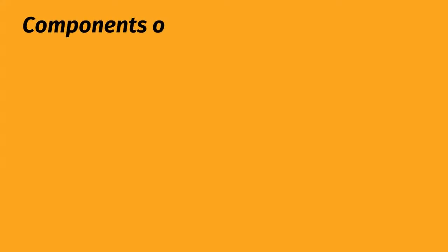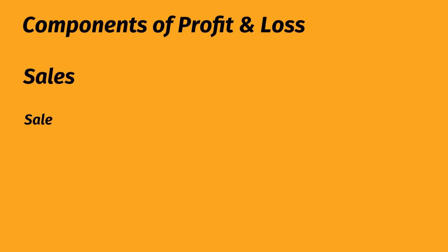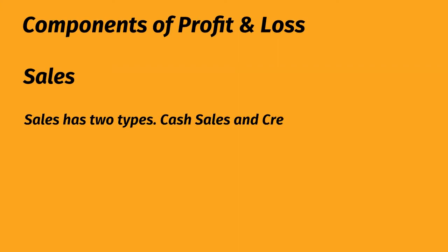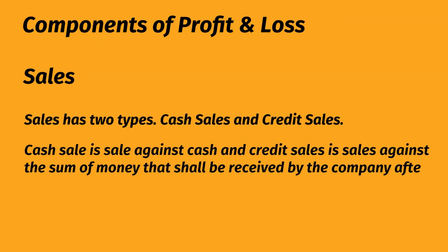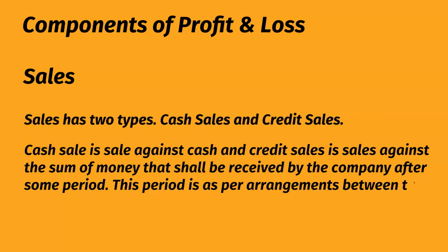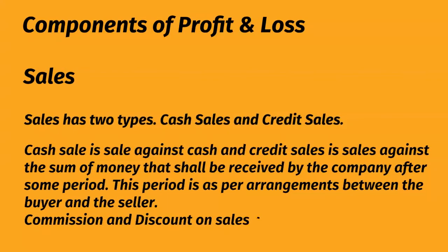Components of profit and loss: Sales. Sales has two types — cash sales and credit sales. Cash sale is a sale against cash, and credit sales is a sale against a sum of money that shall be received by the company after some period, as per arrangements between the buyer and the seller. Commission and discount on sales can be directly deducted from sales.